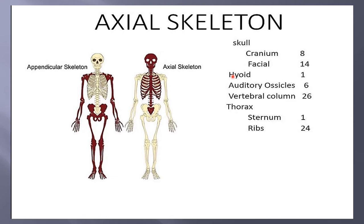The hyoid bone is a lingual bone or tongue bone — it is present here and it is one bone. Auditory ossicles are six bones, three from right and three from left, which are stapes, incus, and malleus.